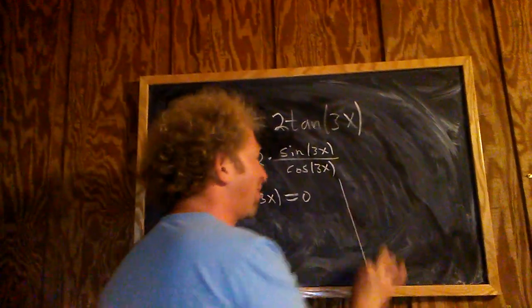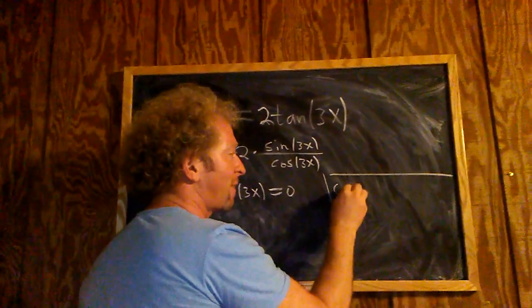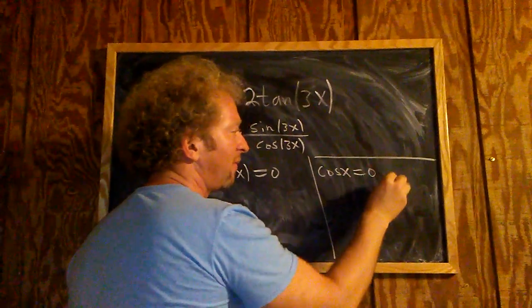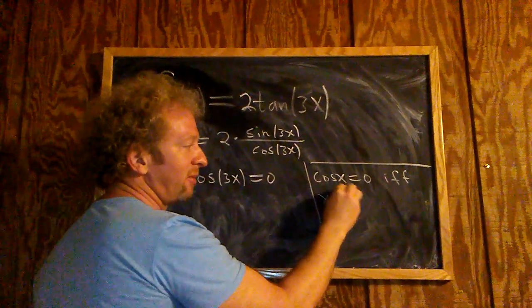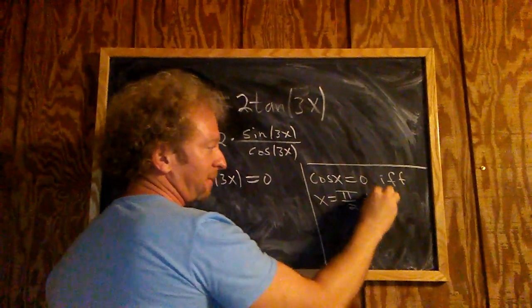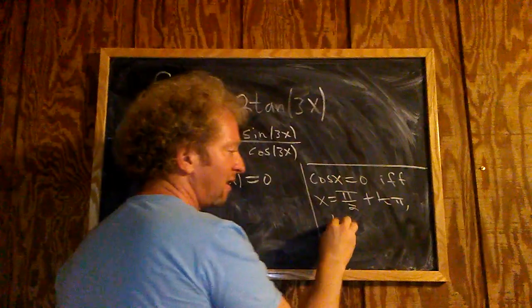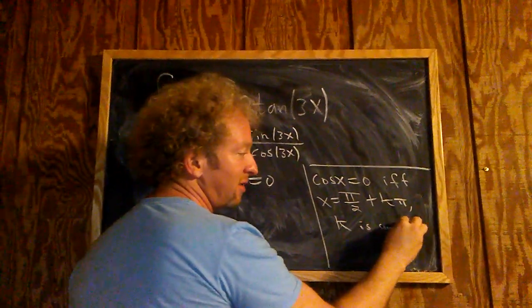So you should know—it's good to know, it's a good life skill—cosine of x is equal to zero if and only if x is equal to pi over 2 plus k pi, where k here is a whole number. In other words, it's an integer.